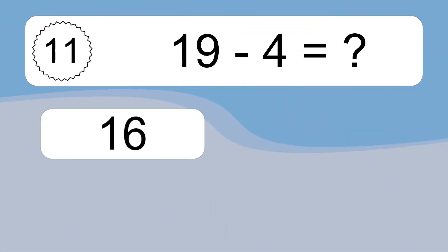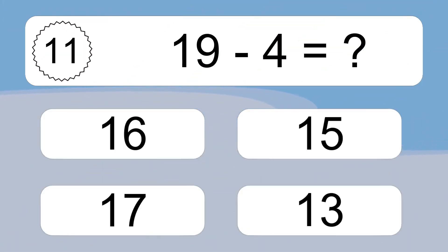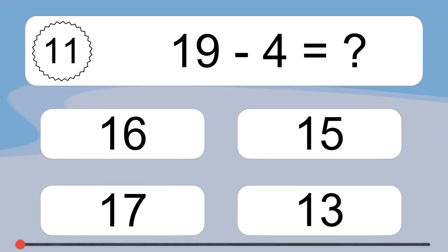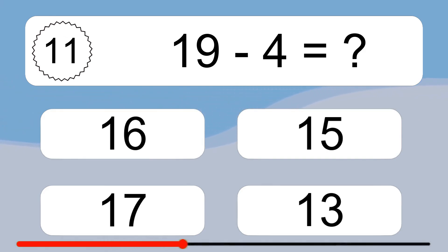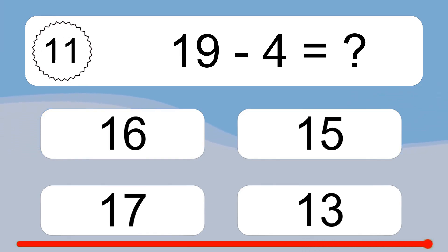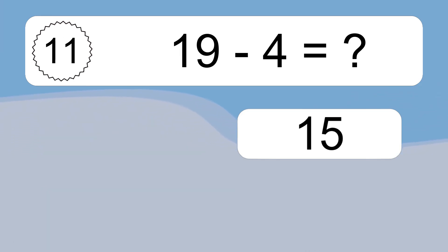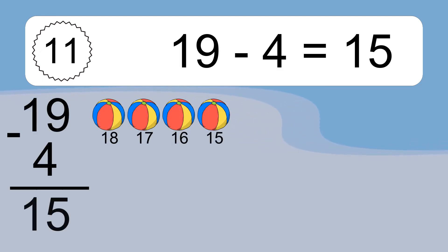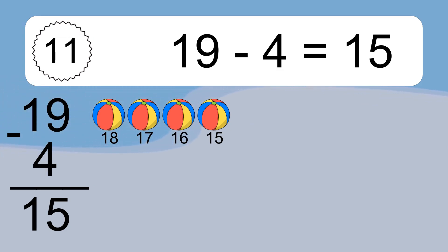19 minus 4 equals what? 19 minus 4 equals 15. Let's count it: 18, 17, 16, 15.